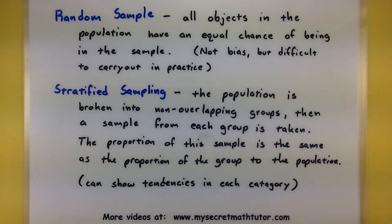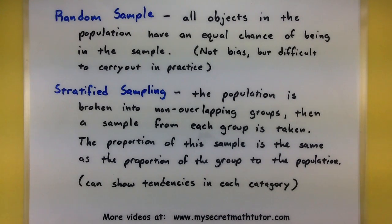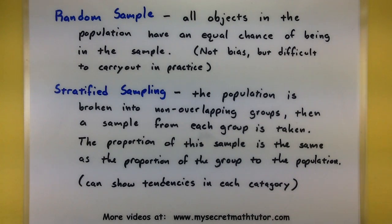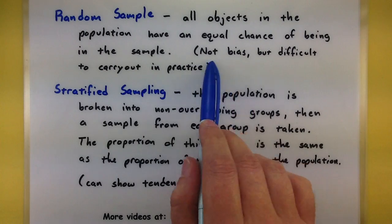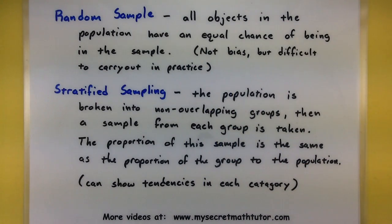One of the biggest types of sampling is random sampling. In this type of sampling, all objects in the population have an equal chance of being in the sample. So that means if you have a hundred things in your population, each one could potentially be included in the sample. This type of sampling is free from bias. But unfortunately, in practice, it can be very difficult to carry out.